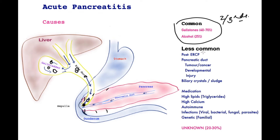Less common causes of pancreatitis include post-ERCP. ERCP is an endoscopic procedure where an endoscope is inserted into the stomach, goes down into the small bowel, positions itself next to the bottom end of the bile tube, and typically tries to get rid of gallstones by drawing them back into the small bowel. In doing so, this may also trigger pancreatitis.